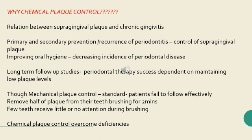So now we need to know why exactly plaque control is required. Chemical plaque control would be essential. Though we have a whole lot of mechanical plaque control agents and interdental aids, we very well know the relationship between supragingival plaque and chronic gingivitis. The primary or secondary prevention, or even prevention of recurrence of periodontitis, mainly lies in the control of supragingival plaque.